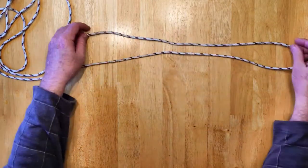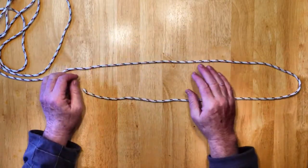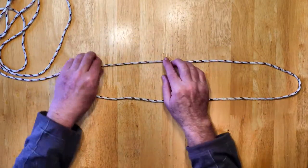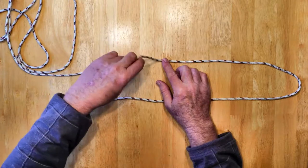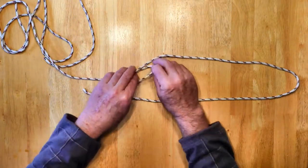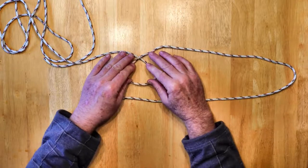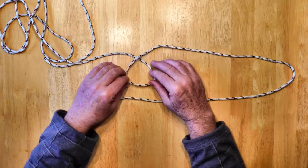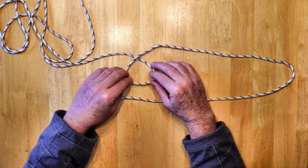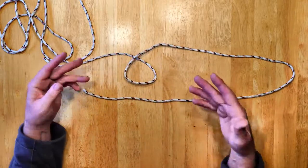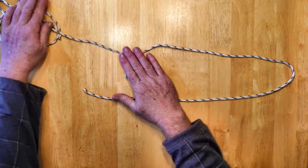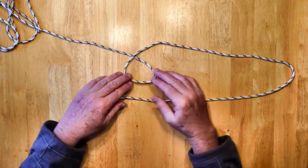Now it doesn't matter whether you do it this way or this way, the steps are the same, you just have to keep track of a couple things. First off, you want to put a loop in your standing end. And I'm having a hard time getting this cord to lay flat because I've used it so much and it's starting to get twisted up inside.